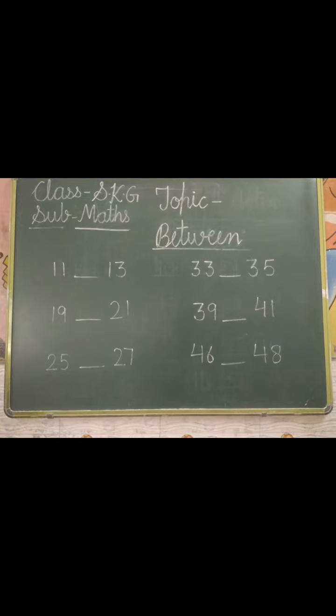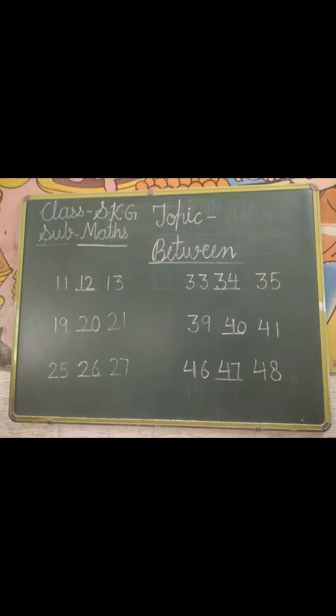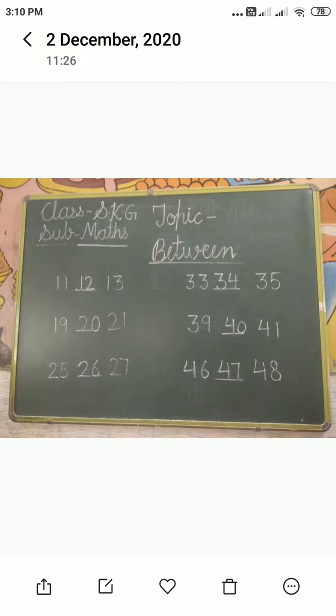Now we will write the between number. 11 and 13 — which number has come in between? 12. 19 and 21 — which number comes in between? 20. 25 and 27 — which number comes in between? 26.